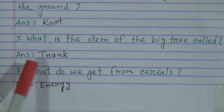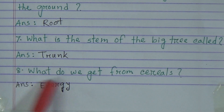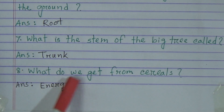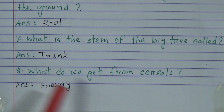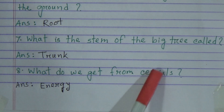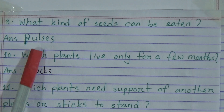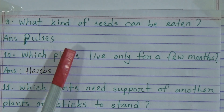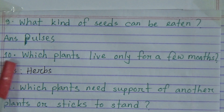Number eight: What do we get from cereals? Answer: energy. We get energy from cereals. Number nine: What kind of seeds can be eaten? Answer: pulses. Pulses can be eaten.